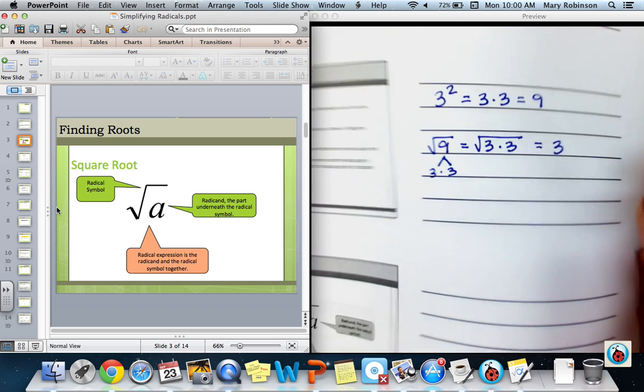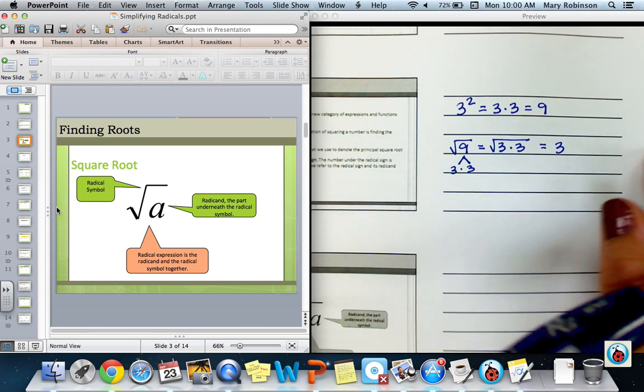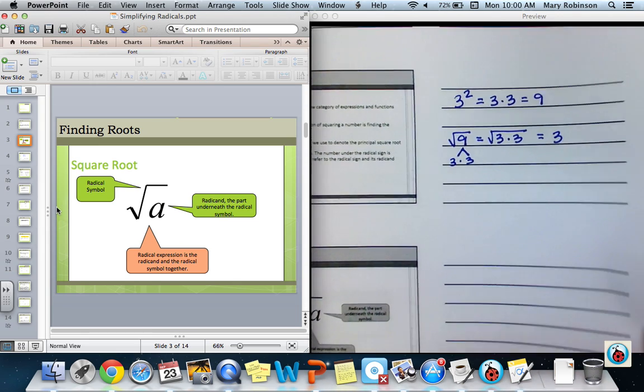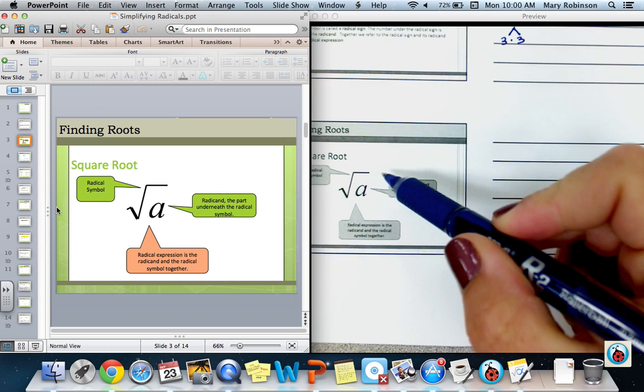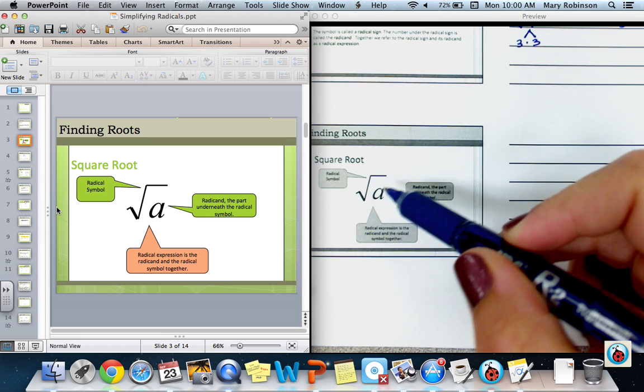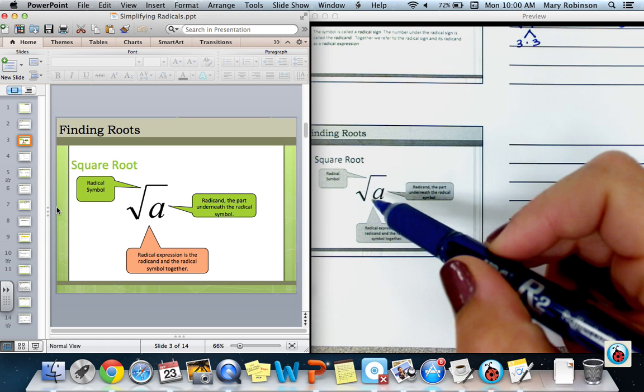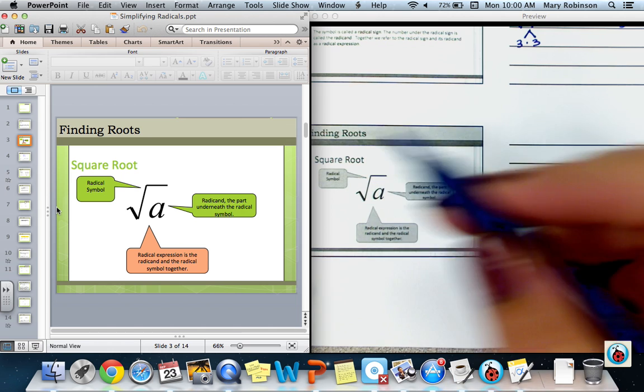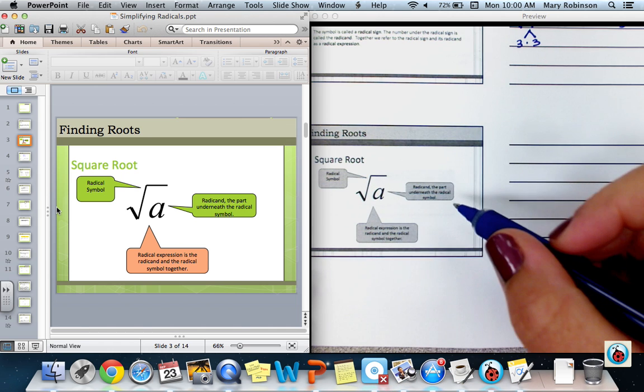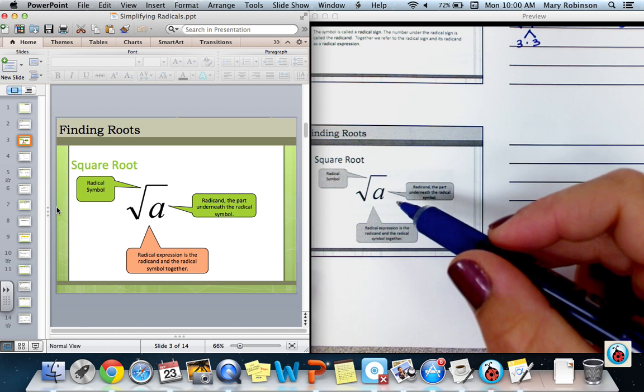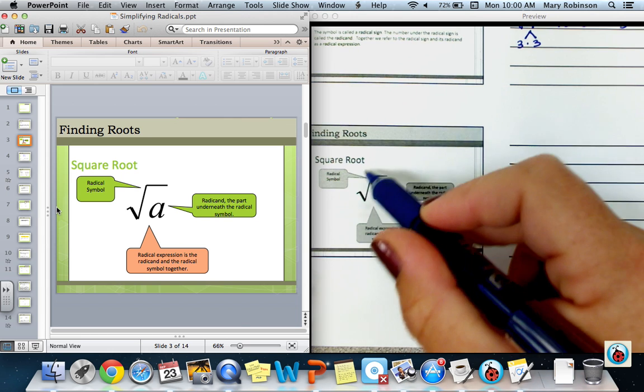If we take a look at this slide on the left, the radical symbol is your square root sign. It can often be a cube root sign or fourth root, depending on what is known as the index. The radicand is the part under the radical and the whole thing is known as the radical expression.